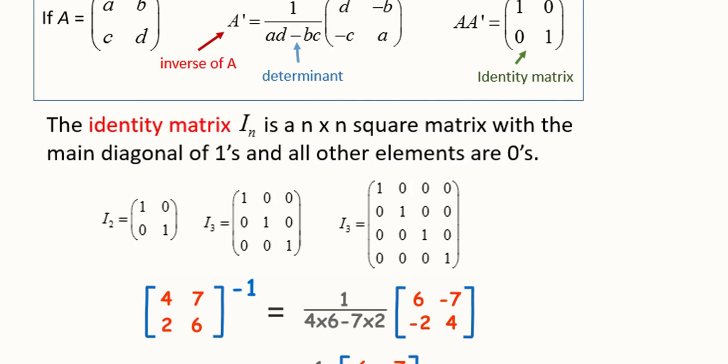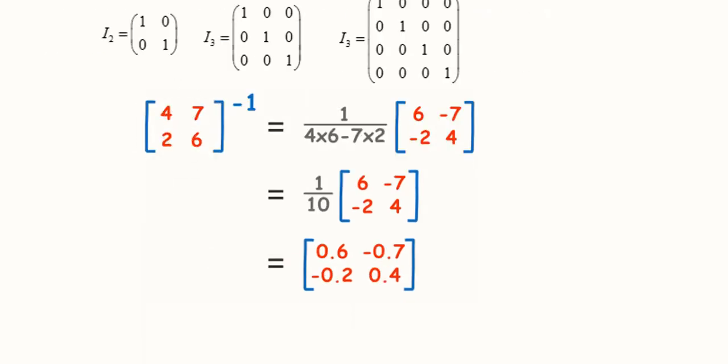So, here we are assuming this numerical example. This is A and its inverse. You know, it would be equal to 1 over A determinant into A adjoint. So, this is the solution. This is actually the A inverse.